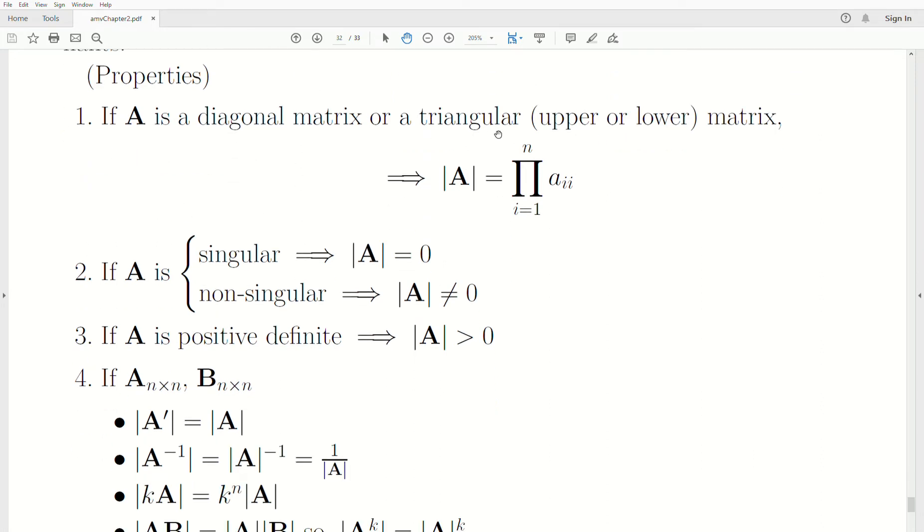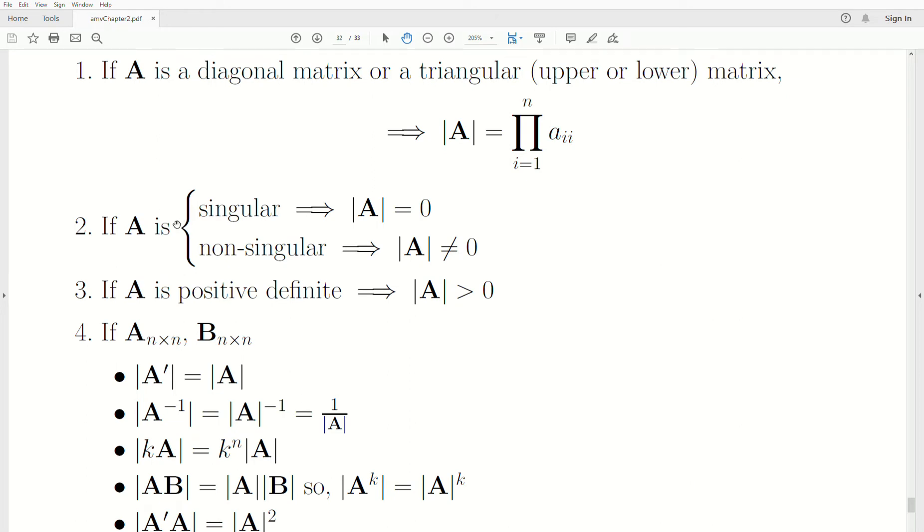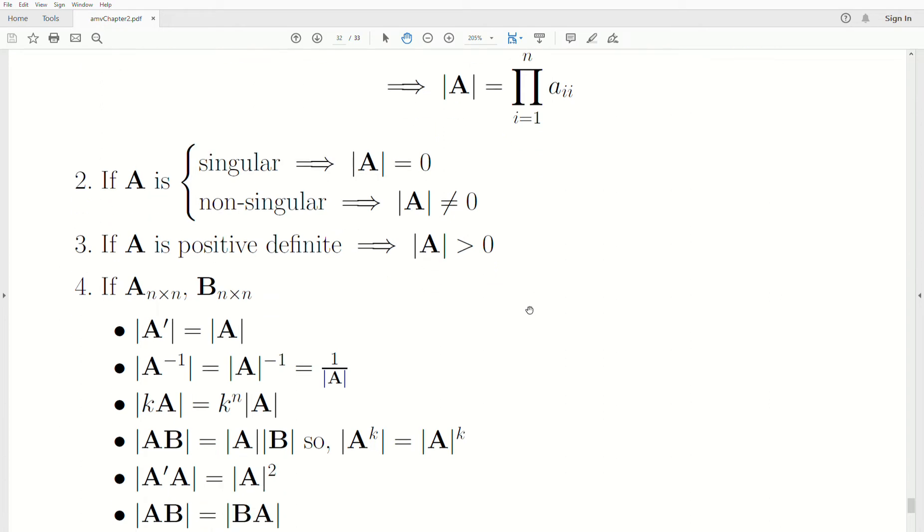Now, if A is a diagonal matrix, then the determinant of A is just a product of the diagonals. Now, if A is singular, what does singular mean? It means that the columns are dependent, meaning one of the columns can be written as a linear combination of the other vectors. And the determinant is zero. So A is non-singular. What does non-singular mean? All the columns are independent. And then the determinant is non-zero. If A is positive definite, then we know that the determinant of A is greater than zero.